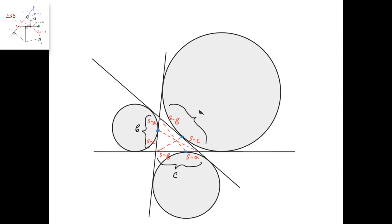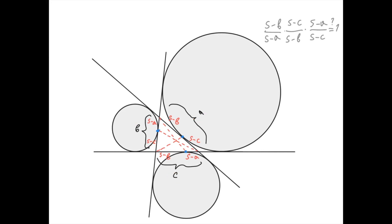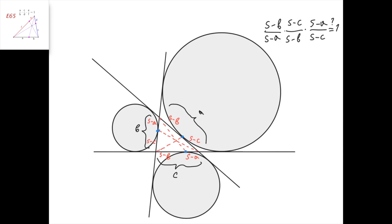Ceva's theorem states that this line, this line, and this line intersect at one point if and only if (s-b)/(s-a) times (s-c)/(s-b) times (s-a)/(s-c) equals 1, which is given here.